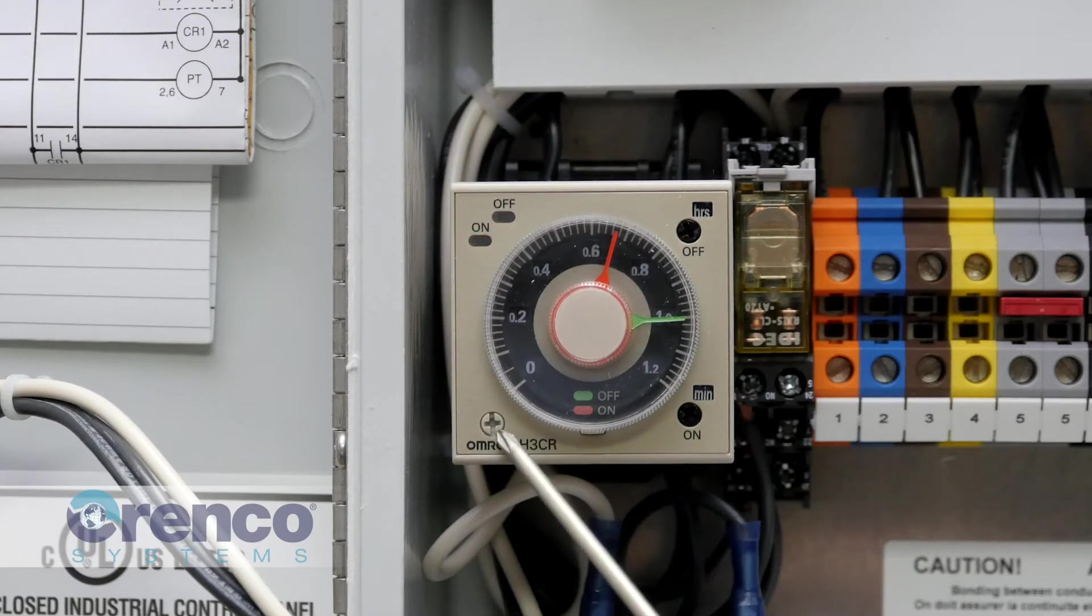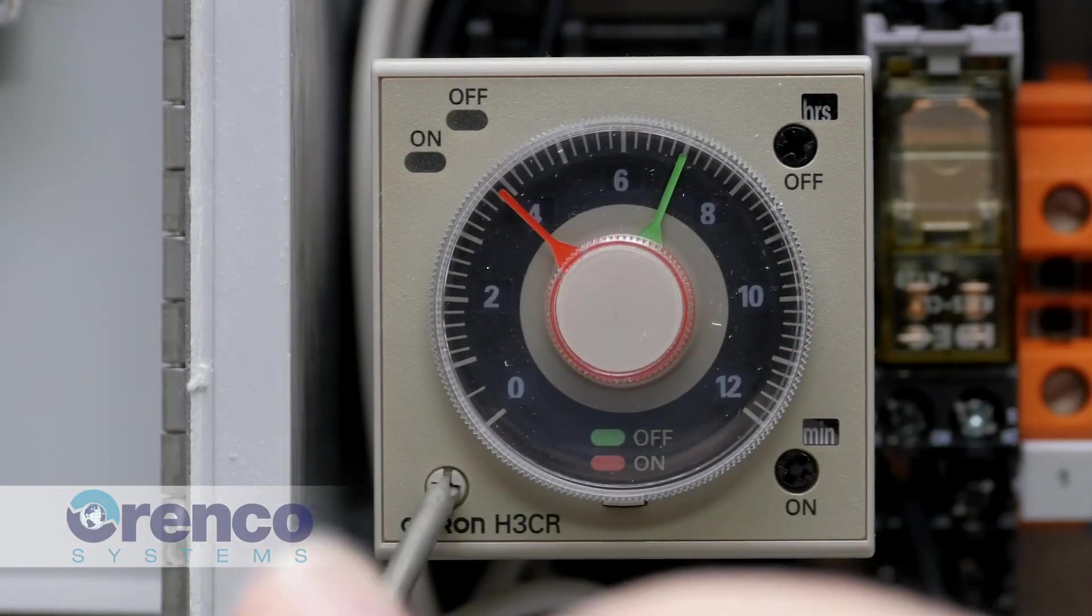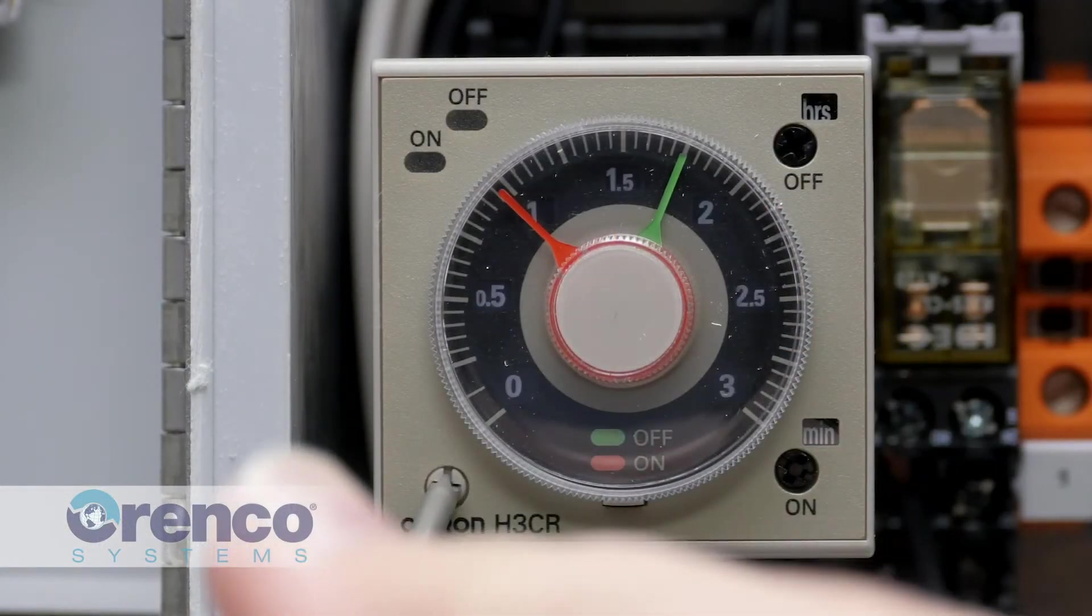Below the status lights in the lower left corner is the time range selector. Turning the selector will change the range indicators inside the windows on the face of the dial.